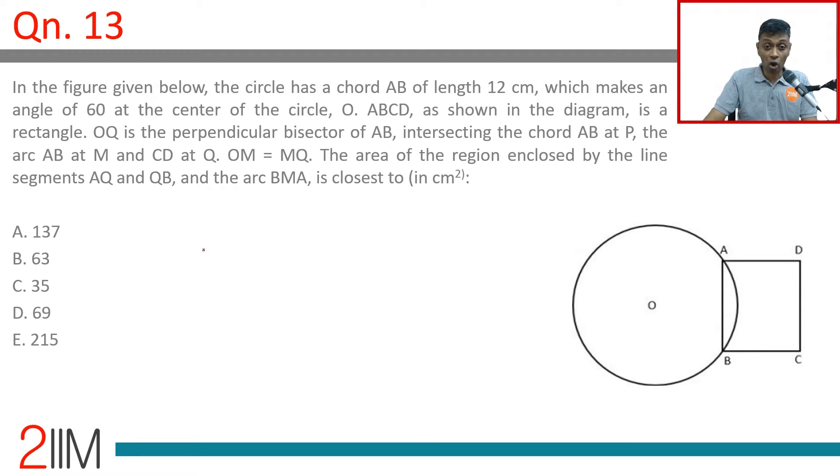In the figure given below, the circle has a chord AB of length 12 centimeters which makes an angle of 60 degrees at the center of the circle. At center O this is 60, so OAB is an equilateral triangle. This is 12, this is 12, this is 12—the radius of the circle is 12.